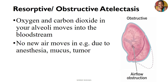Tumors accumulate in our air spaces, cover the whole air space, and the air already existing there gets absorbed with no other to go in again. So resorptive or obstructive simply means whatever air is already in the system gets absorbed and there is nothing to replace it. As a result, our alveoli remain empty and are at risk of collapsing.